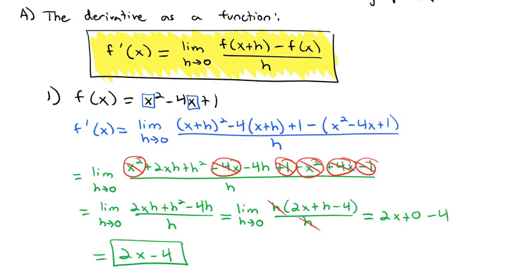Now if we want the derivative at any value, we just plug in that number. If we want the derivative when x equals 0, plug in 0 — we get negative 4. If we want the derivative at x equals 10, plug in 10 — we get 20 minus 4, which is 16. It's really quick to calculate the derivative now that we have a function to describe it.